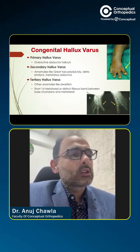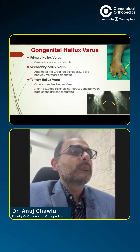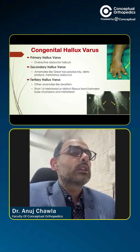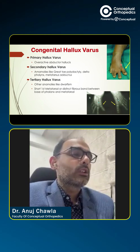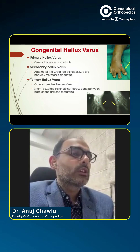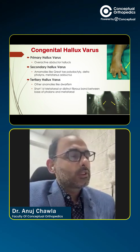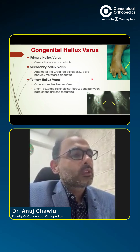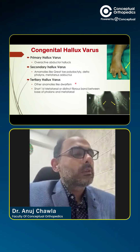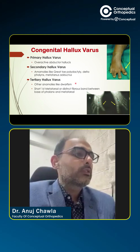The abductor hallucis muscle, which is on the medial side of the big toe, when it contracts, it causes the varus deviation of the big toe. So there can be secondary hallux varus,